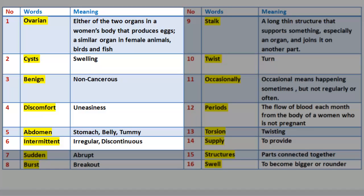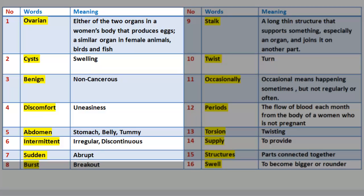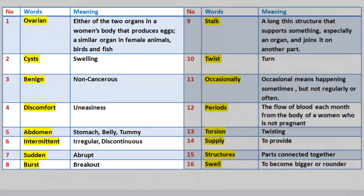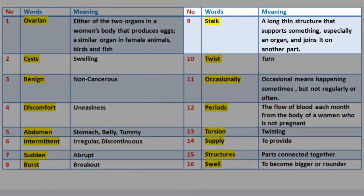6. Intermittent: irregular, discontinuous. 7. Sudden: abrupt. 8. Burst: breakout. 9. Stalk: a long, thin structure that supports something, especially an organ, and joins it to another part.